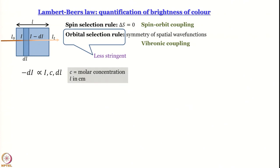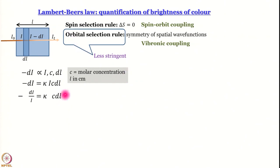One thing to note is that C is always written as molar concentration and L is always written in centimeters — that is what gives us the units. So minus dI equals κ·I·C·dL, where κ is the constant of proportionality. Rearranging gives minus dI/I = κ·C·dL. Integrating both sides — left side from I₀ to I_t, right side from 0 to L — gives ln(I₀/I_t) = κCL.